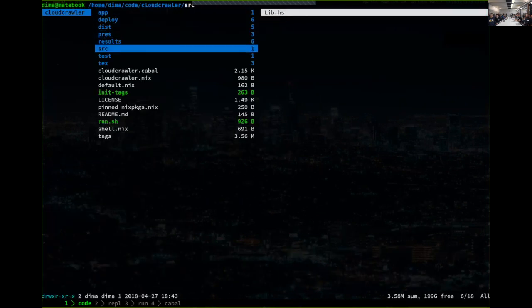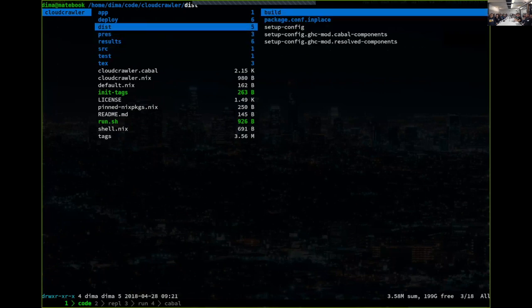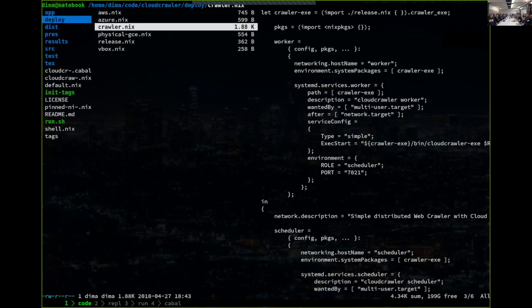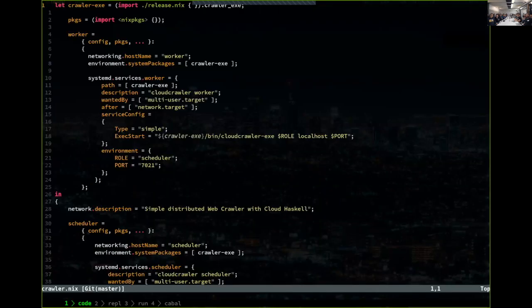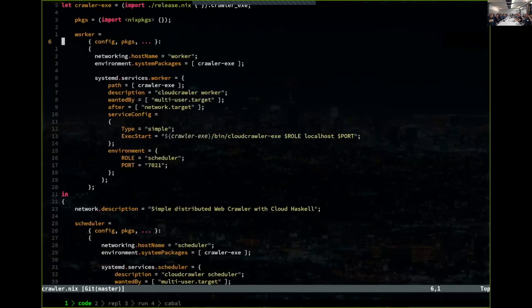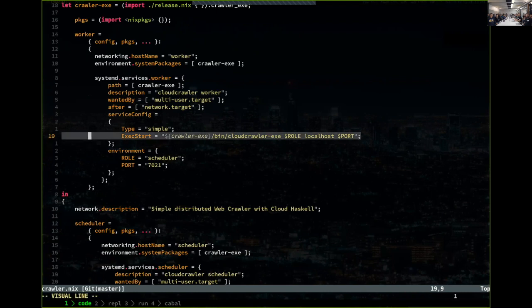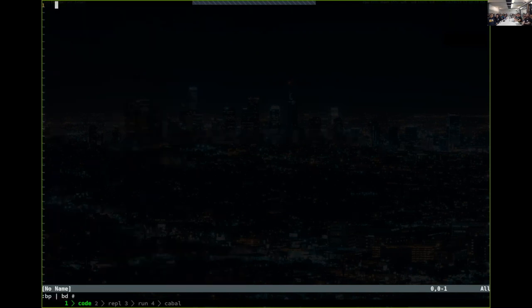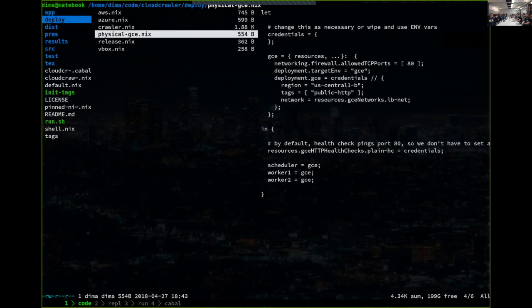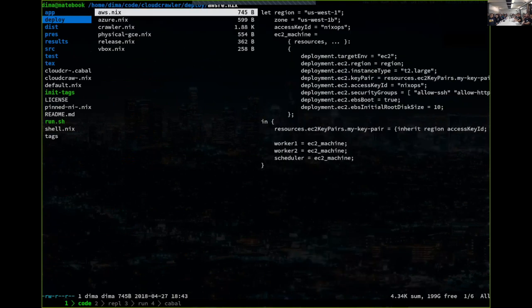When I was into this, I also played around with Nix and NixOps. Essentially what I ended up doing is I ended up creating these systemd services that would start. You would be passing in the different parameters and different environment variables to specify if it's a worker node or the scheduler node. I did get it to the point where I was able to deploy this to AWS, and that's what this looks like. It's really simple, actually.